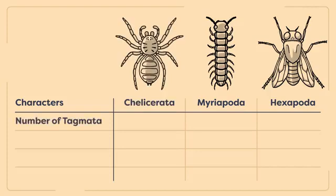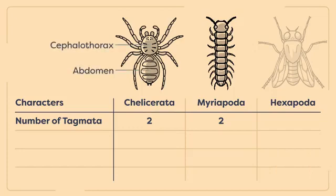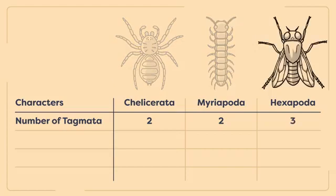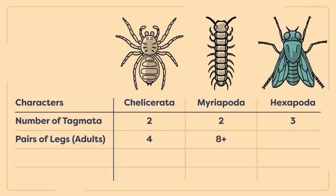First, let's look at the number of body regions. Most chelicerates and myriapods have two body regions, or tagmata. Depending on the organism, the two tagmata can be quite different. For example, spiders have two body regions — the cephalothorax and the abdomen — whereas in myriapods the two body regions are known as the head and the trunk. Adult hexapods have three body regions: the head, thorax, and abdomen. Another way to distinguish hexapods from other terrestrial arthropods is by counting the number of legs. In the absence of any unfortunate injuries, most adult chelicerates have four pairs of legs, while adult myriapods have at least eight pairs. Adult hexapods have three pairs of legs.